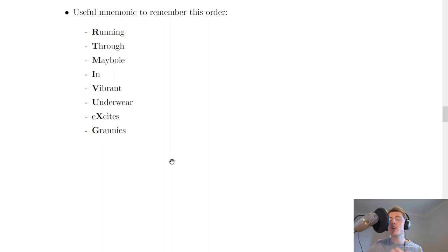And how might you remember this order? Well, here's a funny little mnemonic that I've given you. If you're creative, you can come up with your own mnemonic to try and remember this order. But here's mine relating to a place near air called Maybowl. And it says running through Maybowl in vibrant underwear excites grannies. You'll see I've cheated a wee bit with the capital X, but there are only so many words beginning with X. So I had to kind of improvise there. So if you do come up with your own and you want to share it, then please put it in the comments. And I might even share it with my classes if I think it's good.